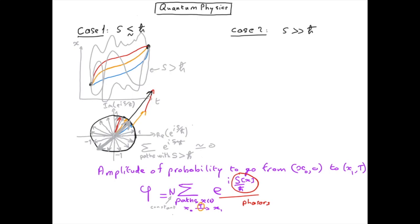So the only paths which really contribute at the end to the total amplitude of probability are those for which the action is essentially less than h-bar or of the order of h-bar, in such a way that the phasor doesn't do a full rotation in the complex plane.